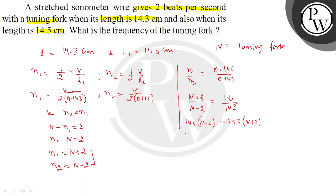After solving, 145N minus 290 equals 143N plus 286, so 2N equals 576, and N will be 288 Hz.